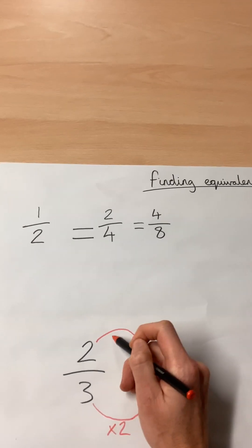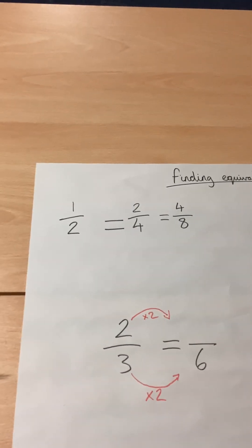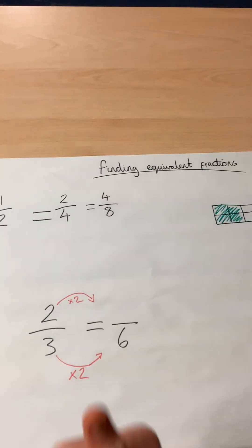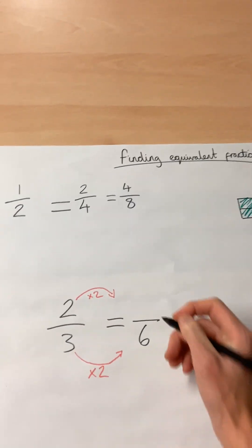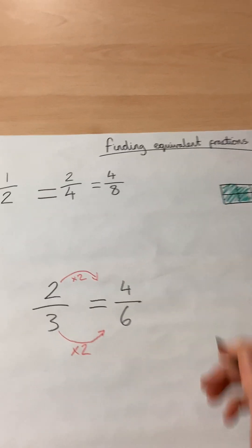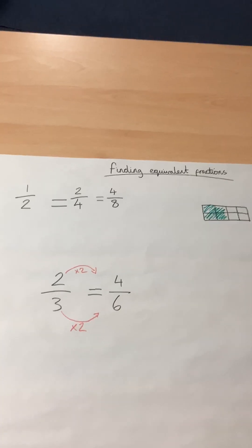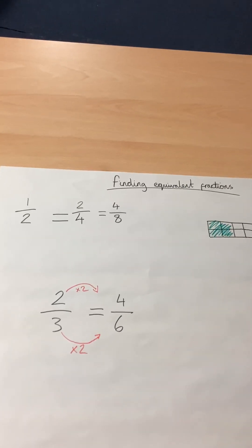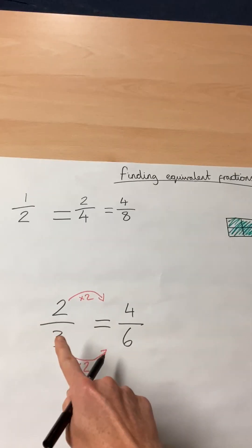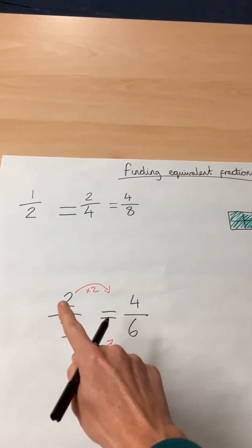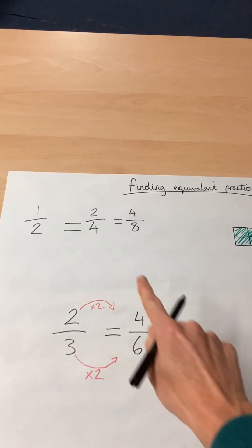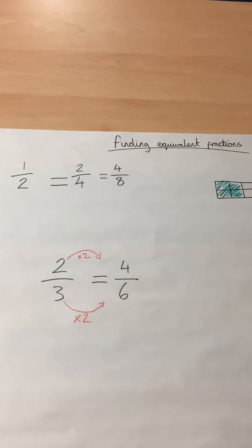Whatever we do to the bottom, we need to do to the top. So, two times two is four. So, two thirds is the same as four sixths. Whatever you need to multiply the bottom by, you multiply the top by the same, and you will get your equivalent fraction.